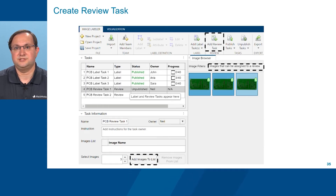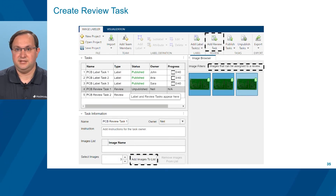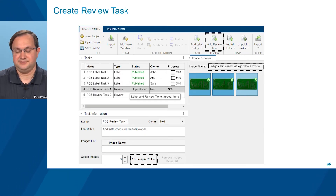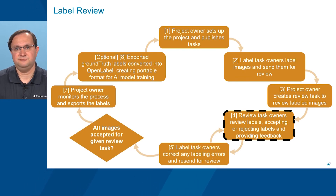The project owner now adds a review task to a review task owner — another team member named Neil — by using the Add Review Task icon at top and adding images to its list through the Add Images to List button at the bottom of the app. Image filters located under the Image Browser pane help narrow down the list of visible images to make task assignment easier to visualize. Once the review task has been defined, the project owner publishes the task using the Publish Tasks icon. After the review task has been published, a review task owner can review the associated labels, accepting or rejecting them, and providing feedback.